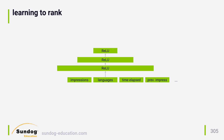They throw as many features into this neural network as they can. They take the entire impression history for the user — that is, every video that was shown to them prior to viewing the video that generated this recommendation. These are embedded and averaged in a similar way to how the sparse view data was encoded to generate recommendation candidates. The language of the user and the language of the video are also embedded into another feature set. They also look at the time elapsed since the user last watched a video on this topic, and the number of previous impressions this user had, which is used as a training feature in several different ways: they take the square root of this value, the square of it, and the value itself all as separate input features.